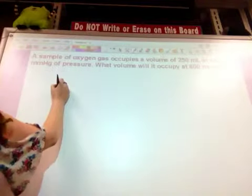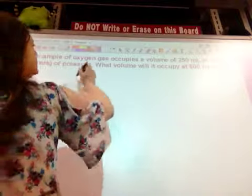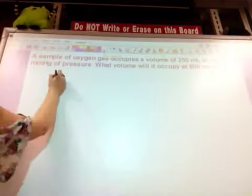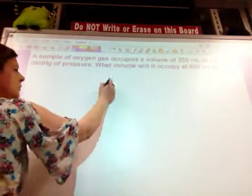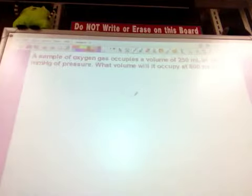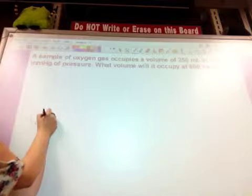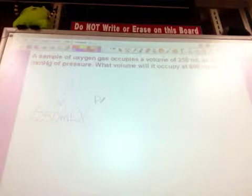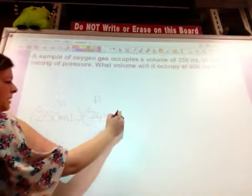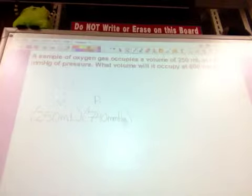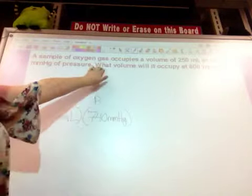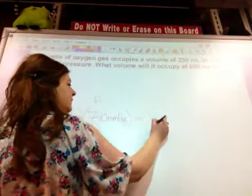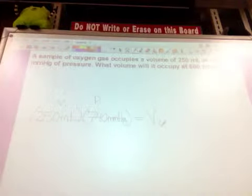So Boyle's Law, we know, is P1V1 equals P2V2. So we have P1V1 equals P2V2. And I know that I have a volume of 250 milliliters. So let's write 250 milliliters would be my first volume, so that's V1. And then my P1 would be 740 millimeters of mercury. I know that I need to find my second volume because it says what volume will it occupy. So I'm trying to find V2. And I know that my second pressure is 800.